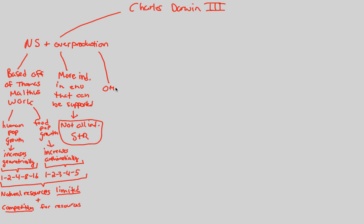Besides the limits to natural resources, there are also other things causing individuals not to survive and reproduce, like predation — being eaten. There's also disease, simply dying because of disease. And there are also abiotic factors — things that aren't living — that cause a struggle for individuals, causing some to survive and some not to. Things like weather: a storm that kills somebody, getting struck by lightning. Those are all abiotic, non-living factors.